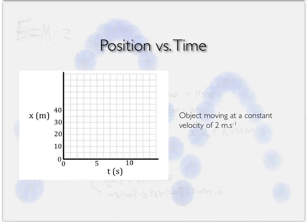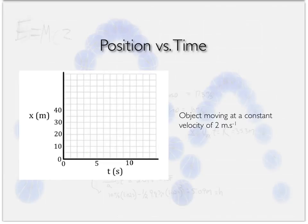I'd like to plot a graph describing an object moving at a constant velocity of two meters per second. That means I'm going to change my position by two meters for every second that goes by. Starting from zero meters at zero seconds, for every second that passes I go up two meters — another second, another two meters. Pause the video: how far have I moved after five seconds if I move at two meters per second?